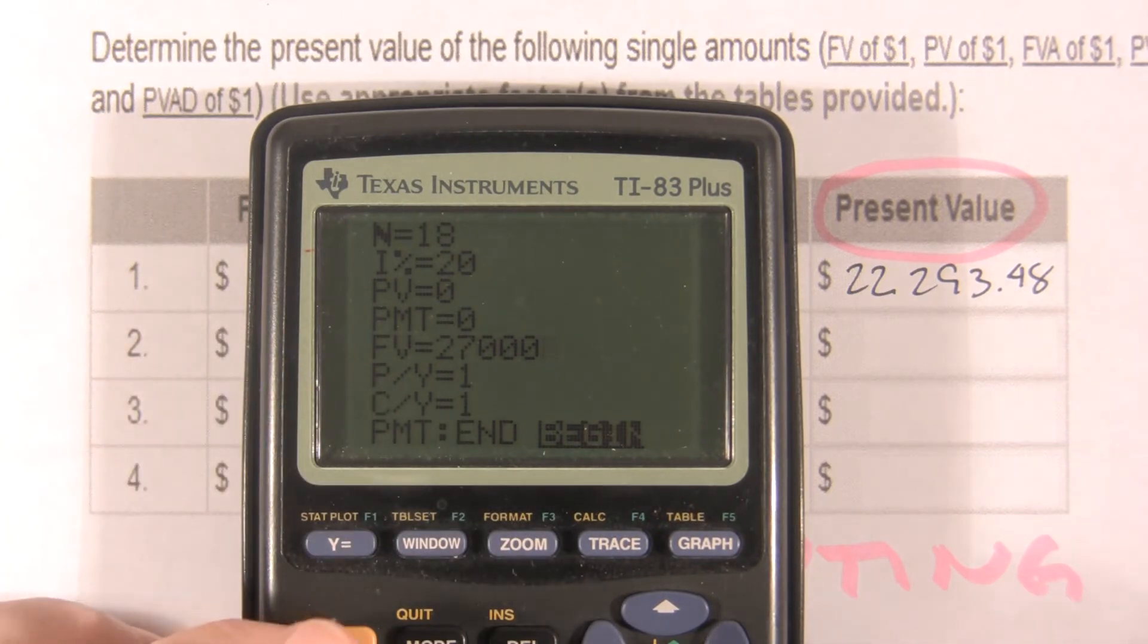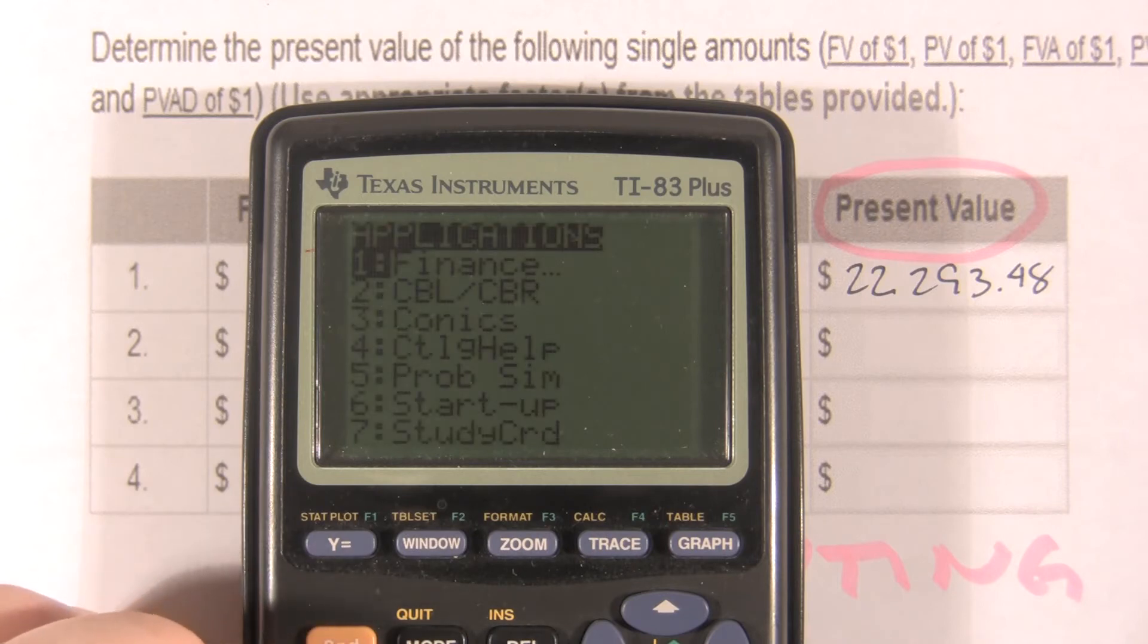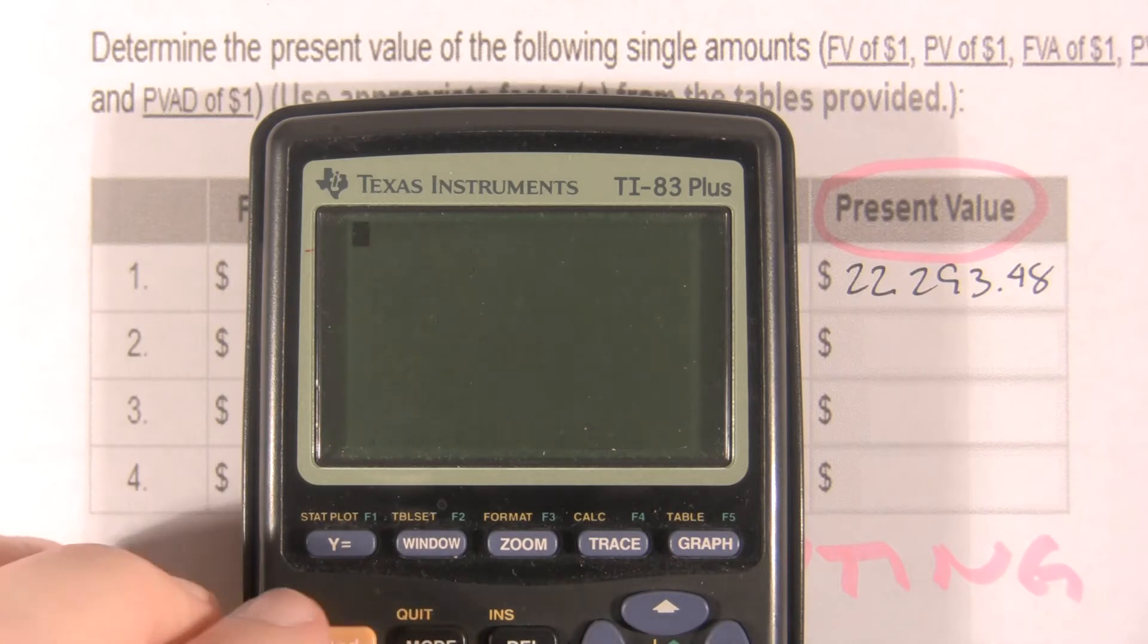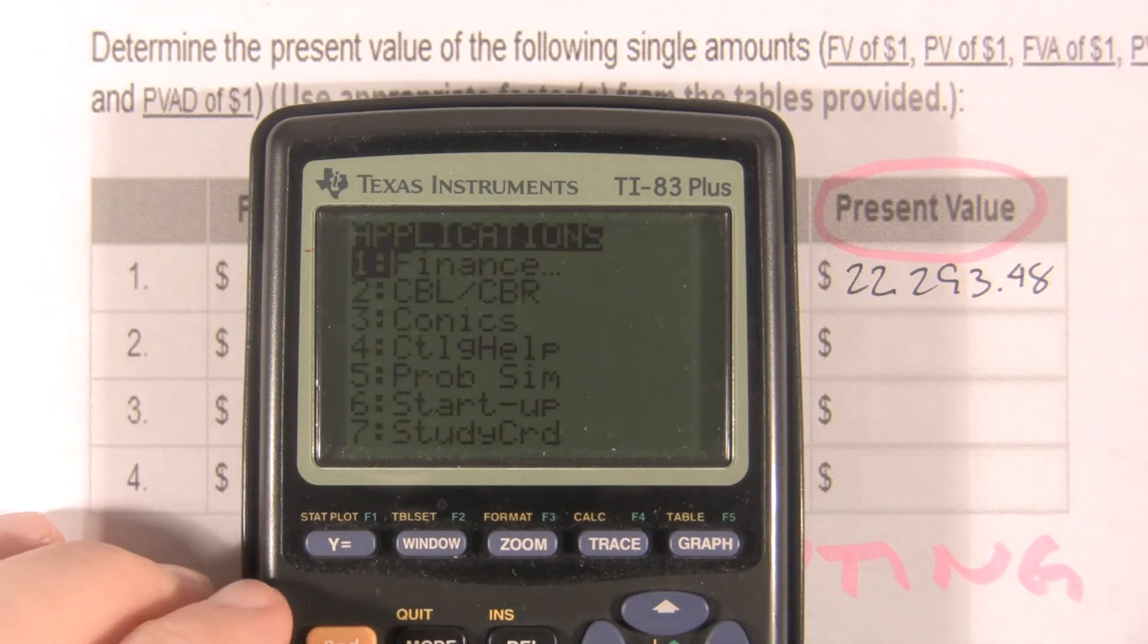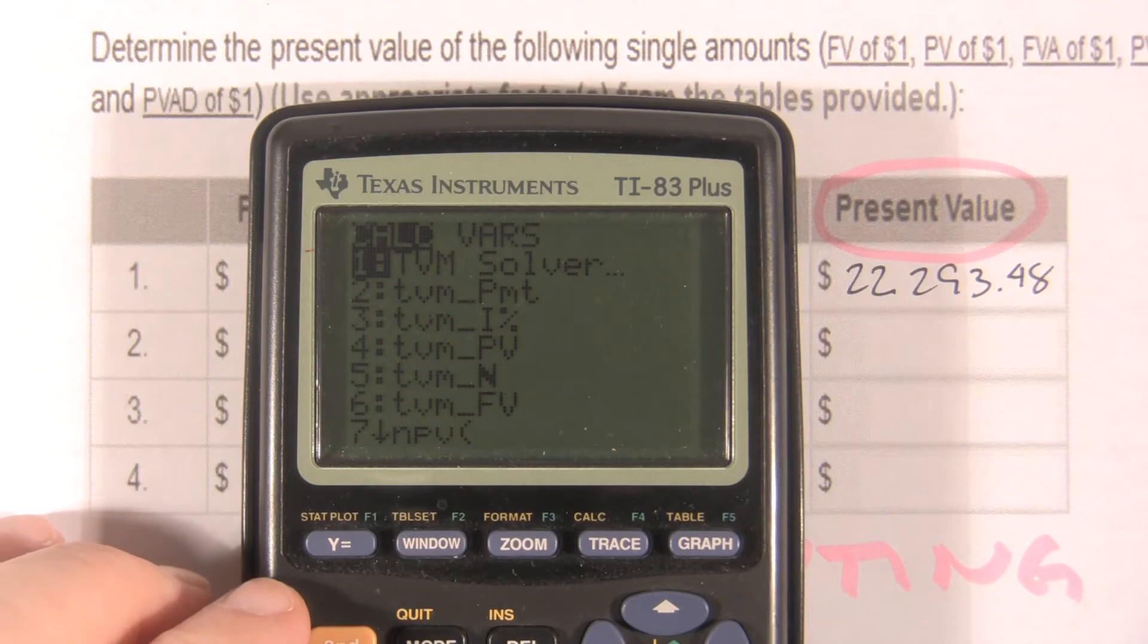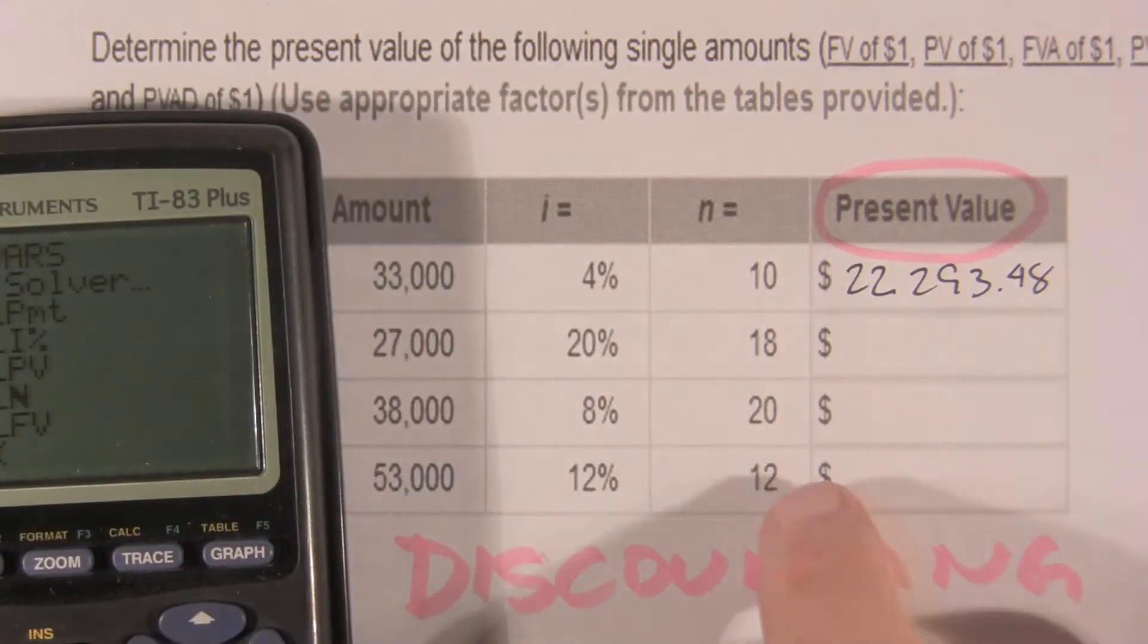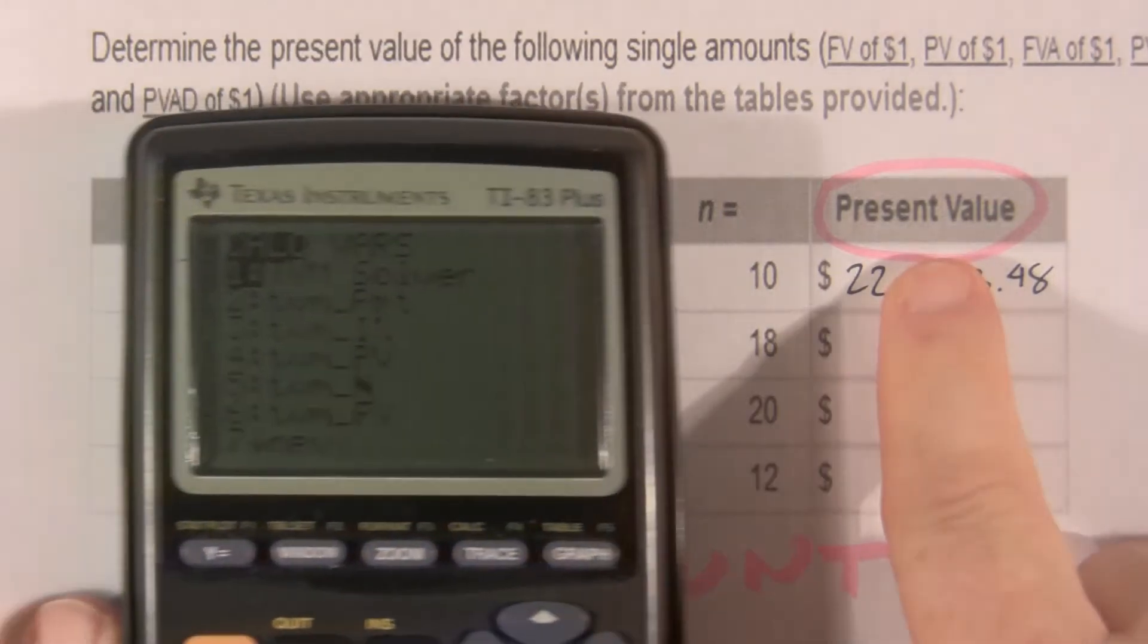So, second quit. Apps, finance, time value of money solver. I did something goofy again, sorry. Second quit, apps, finance, oh yeah, I gotta tell you, I gotta pick which one. Sorry.